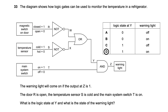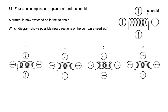Question thirty-four: four small compasses are placed around a solenoid with current flowing in a given direction. Inside the coil the magnetic field goes in one direction and outside it loops back. The compass needles should align with the field — pointing north to south outside and following the solenoid field pattern. The matching option is B.